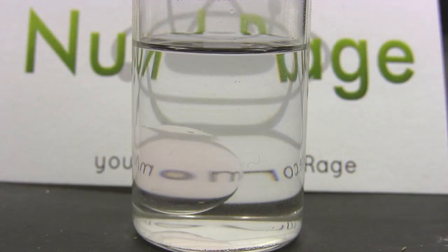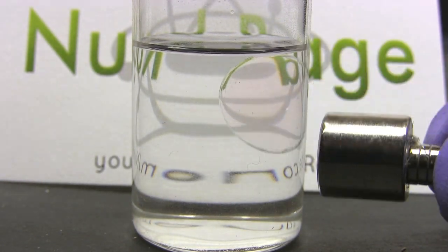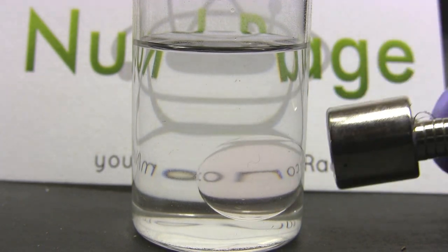And there we have it, a drop of paramagnetic fluid in a dichloromethane carrier fluid. We can clearly see it being attracted to the magnet.